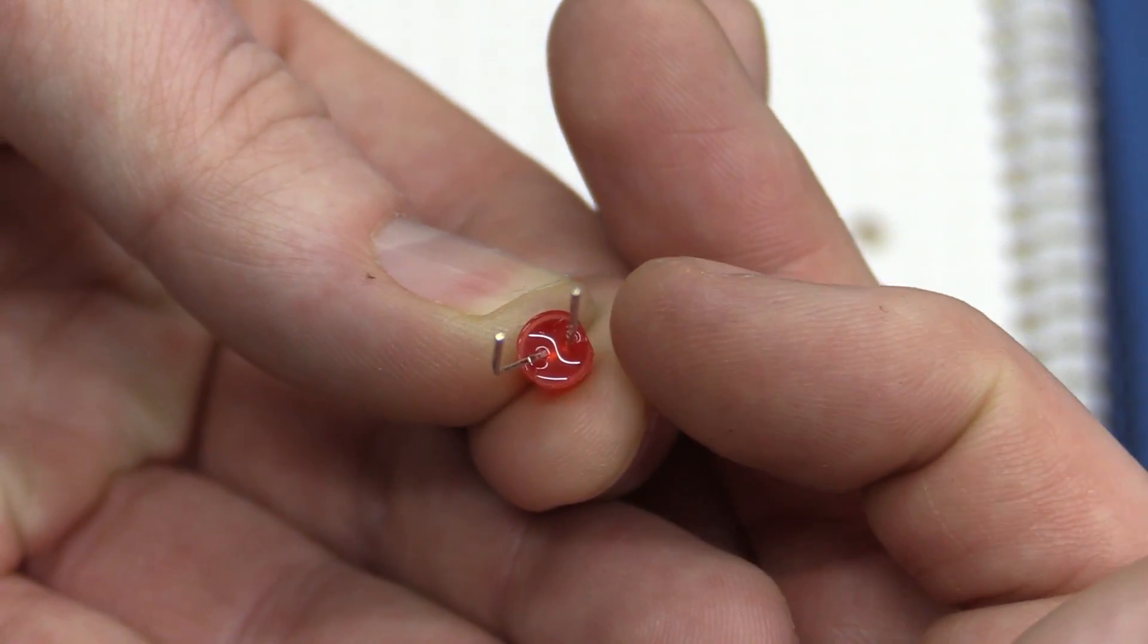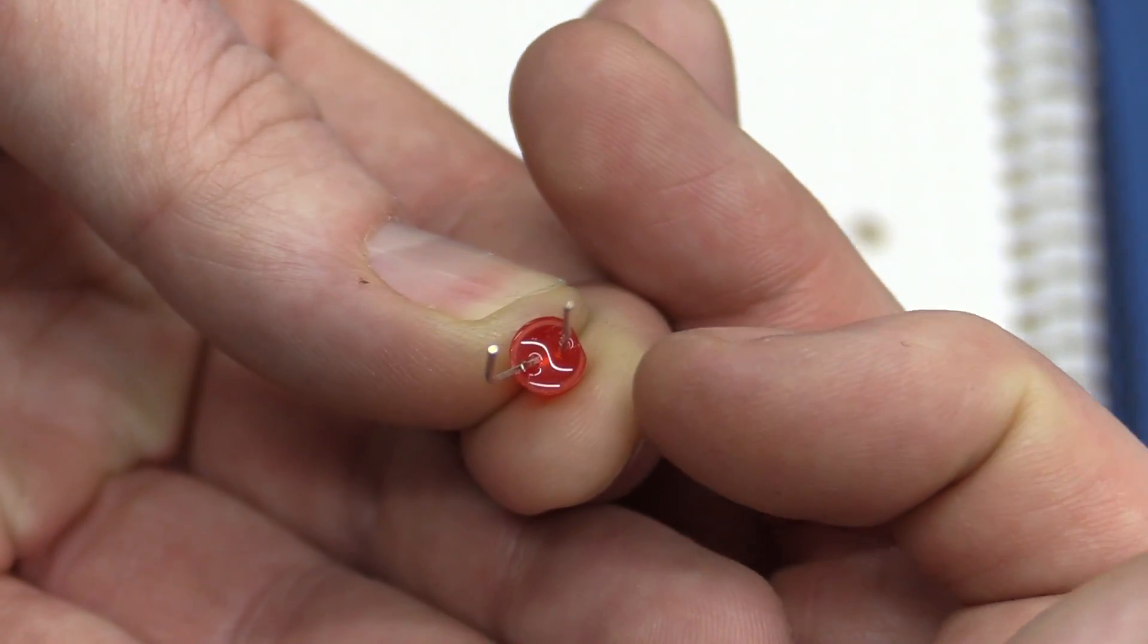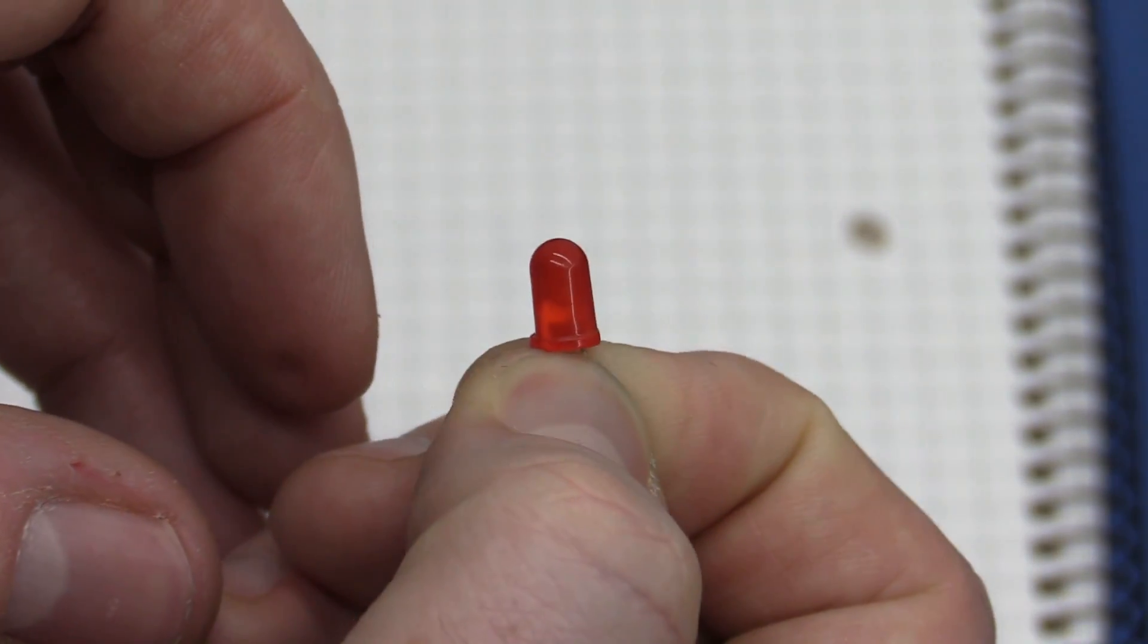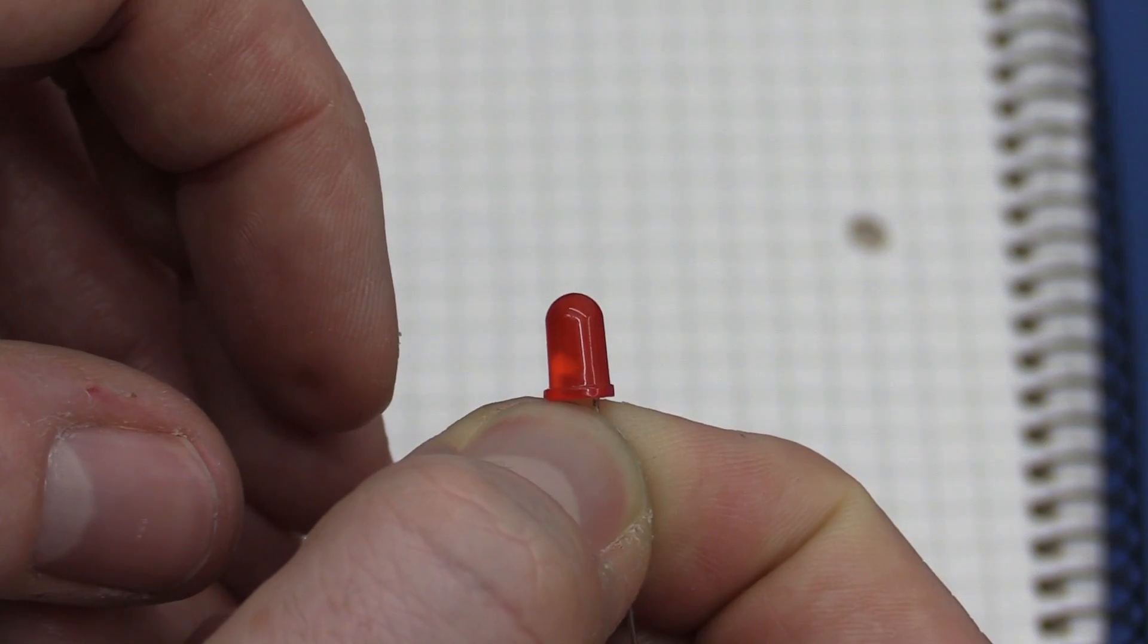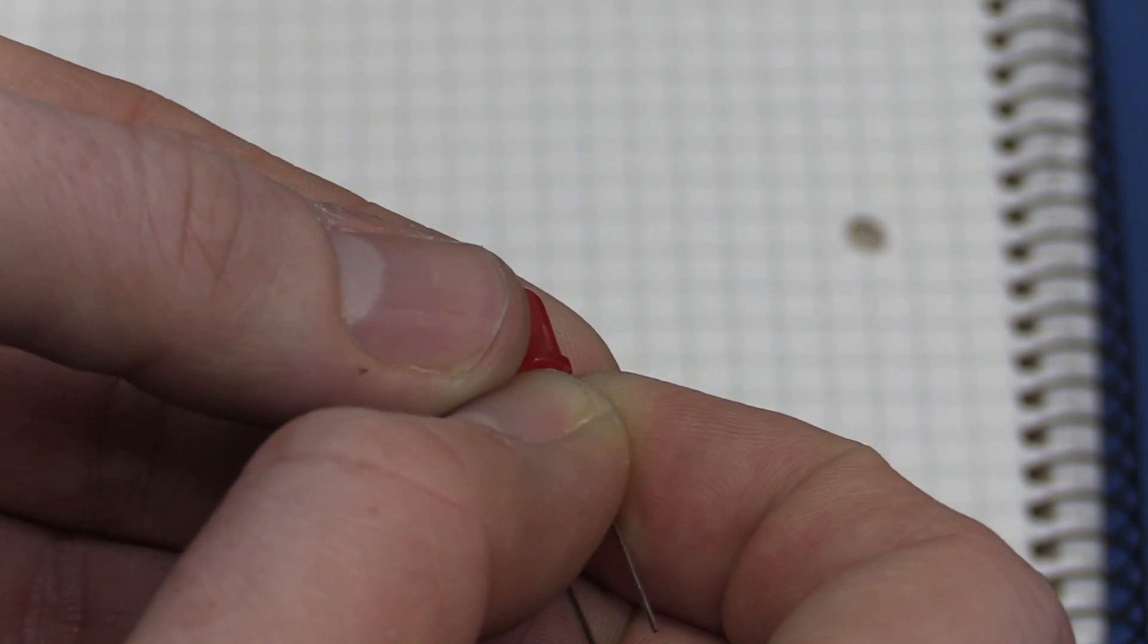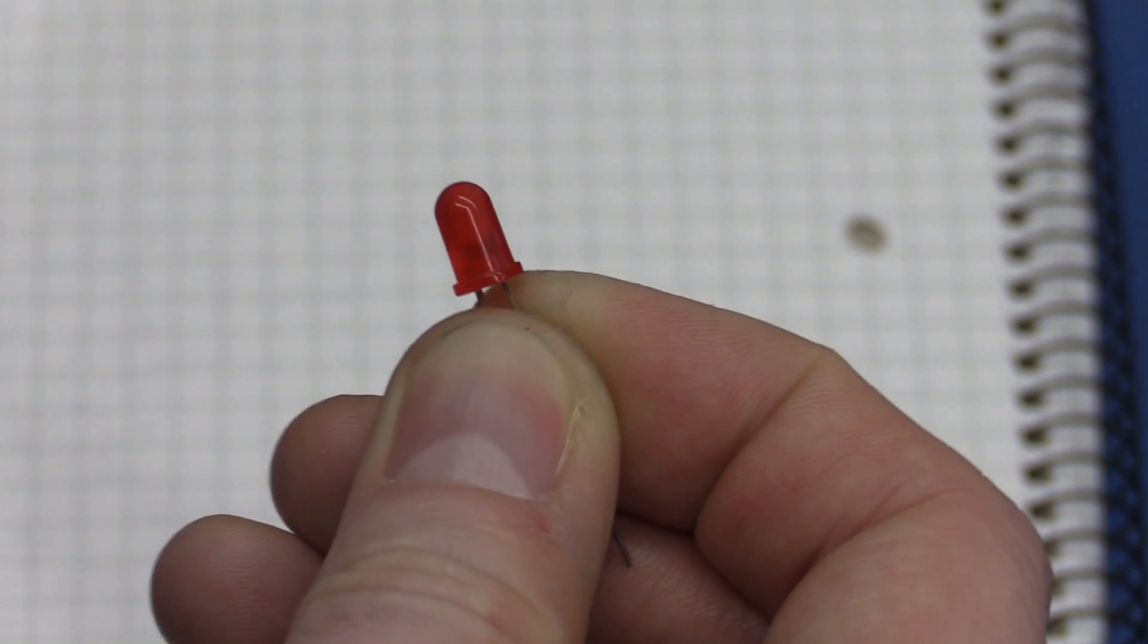Usually there is also this little cutout here where they remove part of the circle so that you can see which one is the positive and negative when it's plugged into a circuit board and the leads have been removed. And the flat side here is for the cathode or the negative side.